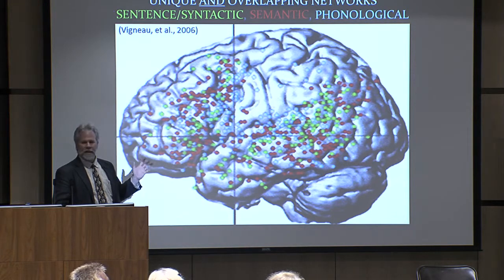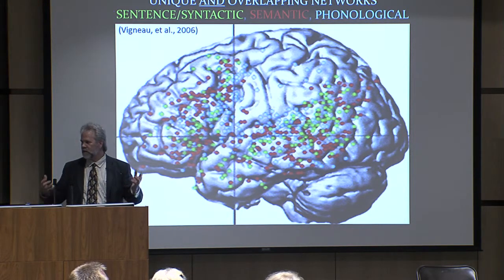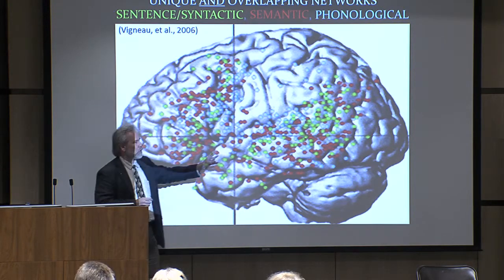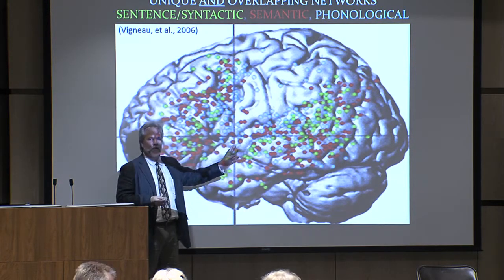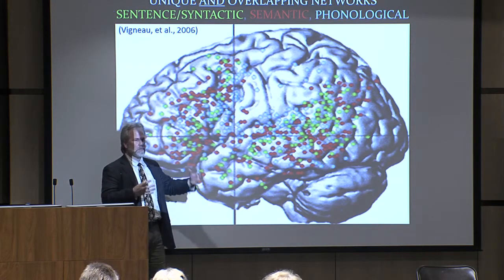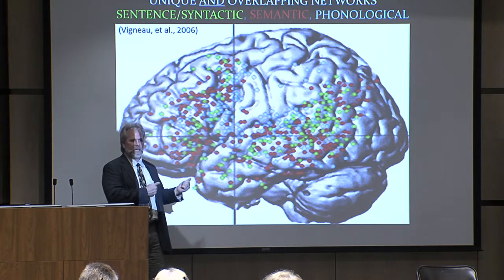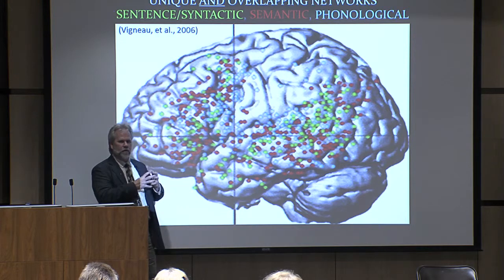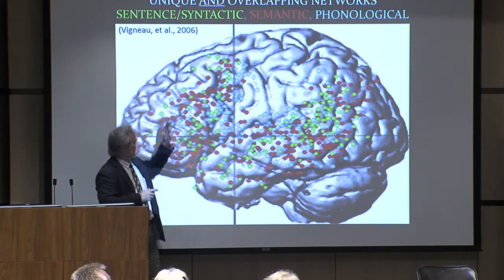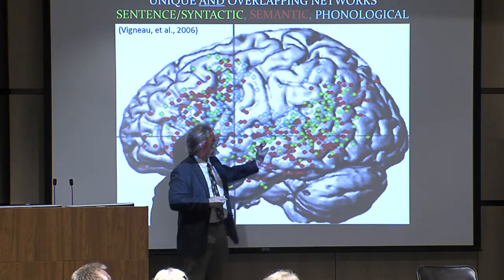This is an fMRI meta-analysis, which means 25 fMRI studies combined together. The blue dots are where brains are active when making judgments about phonology. The green dots are judgments about syntax. The red dots are judgments about meaning. Can you find that one meaning area now? Can you find that one phonology area — that one blue area just processing sound? It doesn't exist, because the brain actually uses distributed networks of information spread across the language cortex.